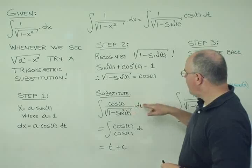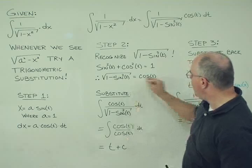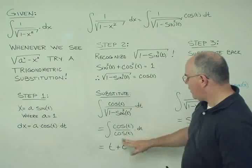We have cosine t dt in the numerator, and in the denominator, we're just going to put in this substitution, cosine of t.